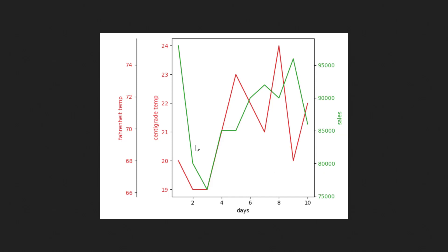Now let's talk about the secondary axis. Taking the same example — some users are comfortable with Celsius and others with Fahrenheit. The secondary axis can be used when you want to do a unit conversion and show the axis in different units. Celsius and Fahrenheit is a great example of a secondary axis use case. Let's create a secondary axis that shows the same Celsius values expressed in Fahrenheit.